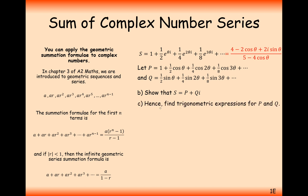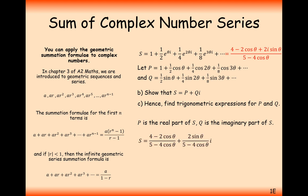Moving on to part C, which asks us to find a trigonometric expression for P and Q. Since S equals P plus Qi, P is the real part of S and Q is the imaginary part of S. Breaking S into real part over the denominator plus imaginary part over the denominator, P is clearly the real part and Q is clearly the imaginary part. That's the answer to this question.